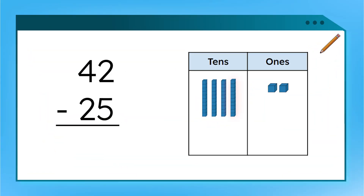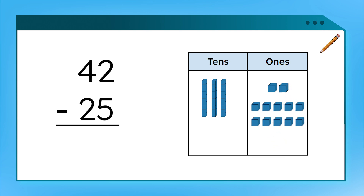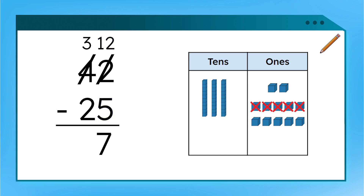Let's give this a try. If we need more ones, we can break apart one 10 block into 10 ones. We had two, and we added 10 more — now we have 12. We can cross out the two in our ones place and write a 12 above to reflect our new number. Since we took away one 10, we also need to update our tens place. We can cross out the four and write three. Make sure you record this in your notes. Now we are ready to subtract: 12 minus 5 equals 7, and 3 minus 2 equals 1. Our answer is 17.